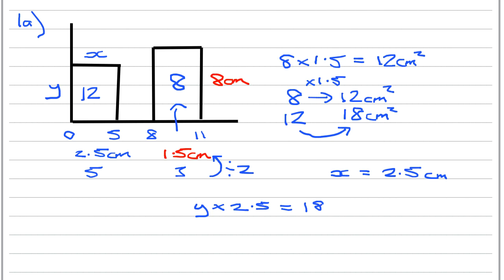So our height, then, is going to be 18 divided by 2.5. So our height, we'll just write this down. 18 divided by 2.5 comes to 7.2 centimeters. And that's part one done.